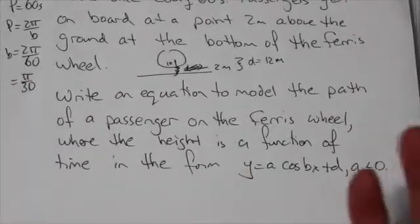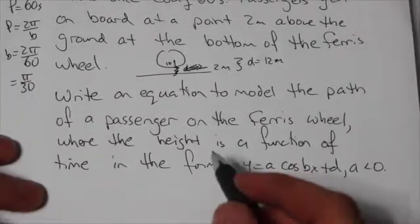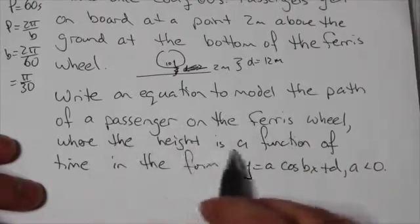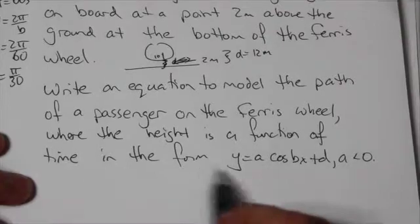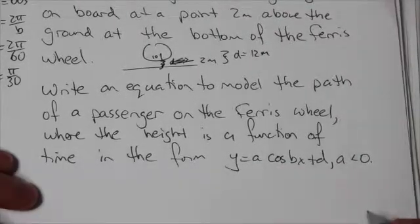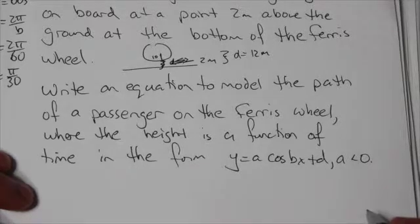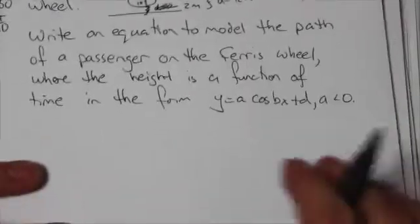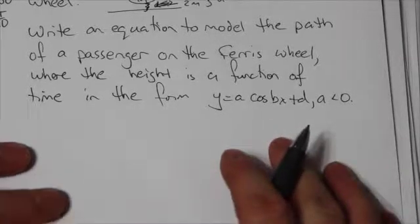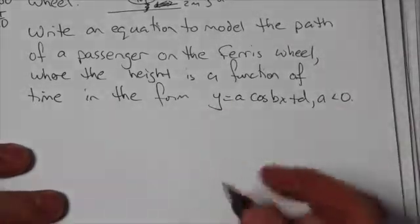So write an equation. Good. There it is. We got already three quarters of it to model the path of a passenger on the Ferris wheel where the height is a function of time in the form a cosine of bx plus d. And look at that. We weren't even asked to find the c value. Now that's a pretty common thing to do on these exams because we know that the horizontal phase shift can cause a lot of difficulties.